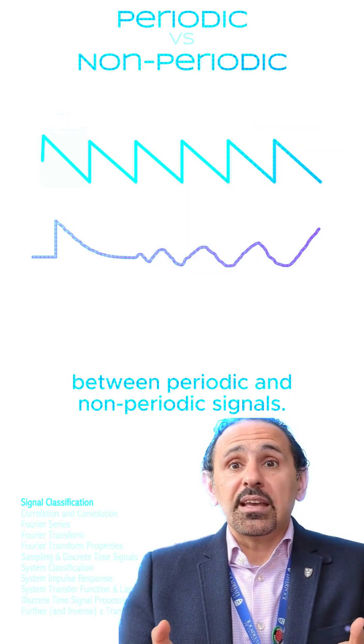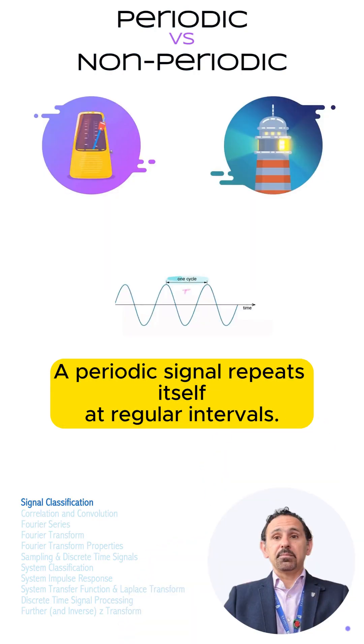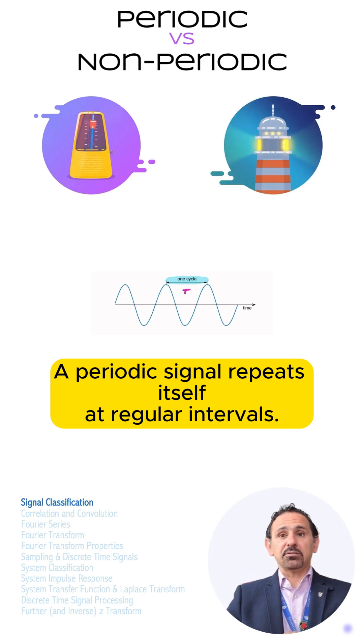Let's explore the difference between periodic and non-periodic signals. A periodic signal repeats itself at regular intervals.